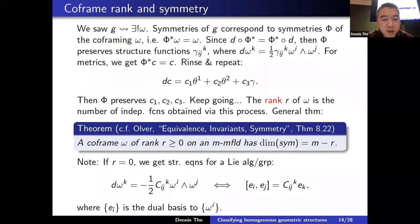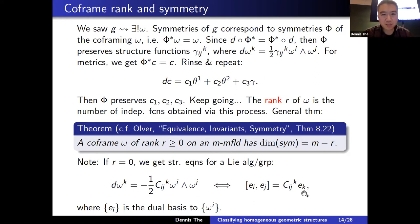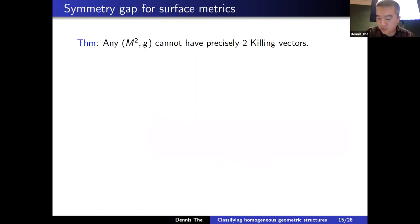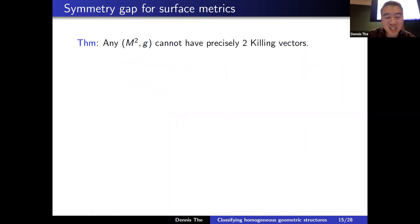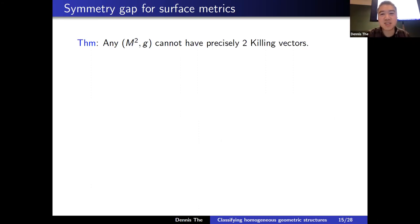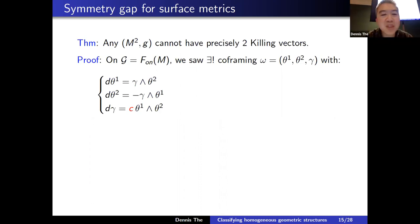If r = 0 — i.e., c is constant — you get the Maurer–Cartan equations for a Lie algebra or group, and the symmetry algebra is m-dimensional. Now let me explain the symmetry gap for surface metrics: any Riemannian surface cannot have precisely two Killing vectors. This is a local statement. A cylinder, for instance, is locally flat and has three Killing vectors locally, not two.